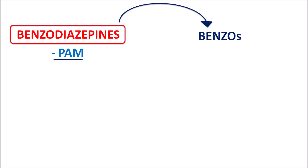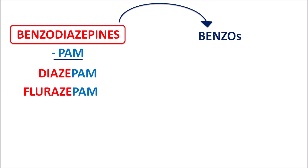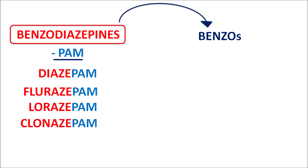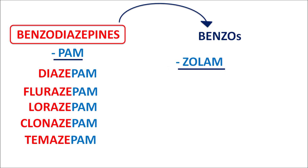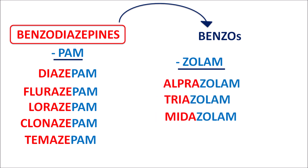Many drugs carry the suffix -pam: for instance, diazepam, flurazepam, lorazepam, clonazepam, and temazepam — all benzodiazepines with the -pam suffix. A few benzodiazepines have a different suffix, -zolam. These are fused benzodiazepines, having an extra ring apart from the benzodiazepine ring. Drugs like alprazolam, triazolam, and midazolam are again benzodiazepines. In this way we can identify benzodiazepines by their suffix.